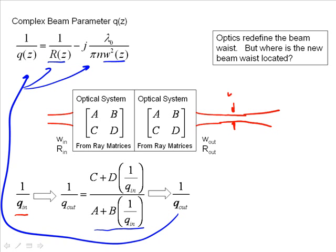How do I know what this new W_0 of the beam is? Because we have a new W_0, a new minimum beam waist, redefined by the optical system. And that may be at some distance Z from the output of the optical system. And we want to know what Z and W_0 are.